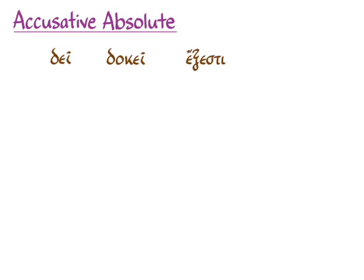But here's where we need accusative absolutes. We've just been learning about verbs like δεῖ, δοκεῖ, and ἔξεστι and χρή, that don't really have subjects — they are all impersonal. In those instances where you want to use a participle to express a dependent circumstance and there is nothing for it to agree with in the main sentence, we use an accusative absolute. It happens with impersonal verbs, and it keeps us from looking around for a genitive noun to go with a genitive participle. It helps us see that these are impersonal constructions.